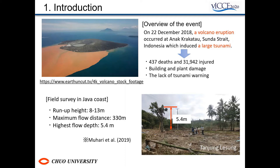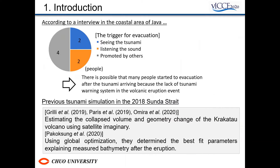According to a field survey conducted by Mihaly et al., the tsunami impacts were large in the coastal area of Banten, and the maximum flow distance was 330 meters. Interviews were conducted in the southern coastal areas of Java island by one of the authors. About 50% of subjects evacuated because they were prompted by adults, and a quarter of them evacuated after seeing the tsunami. As shown in the results, many local residents evacuated after the tsunami arrival time because of the lack of a non-seismic tsunami warning system.